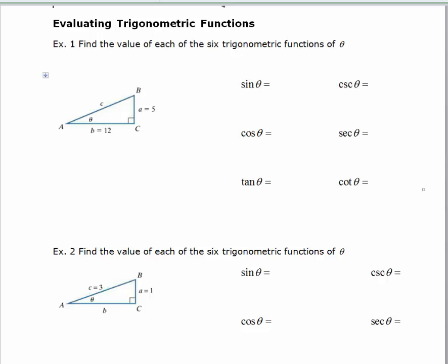Because this is a right triangle, I can use the Pythagorean Theorem. I know that c squared equals a squared plus b squared. So, c squared equals 12 squared plus 5 squared. If you take the square root of both sides, you get plus or minus the square root of 169. But since this is a triangle and we're talking about a length, we only want the positive, so c is going to equal 13.